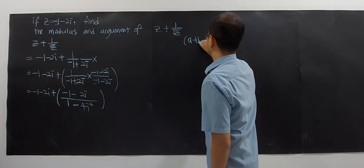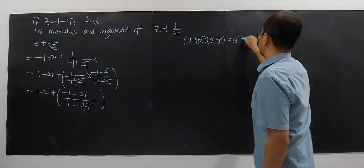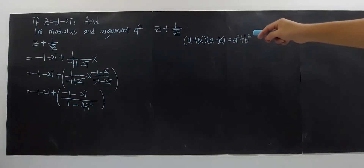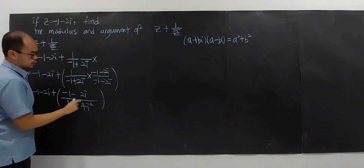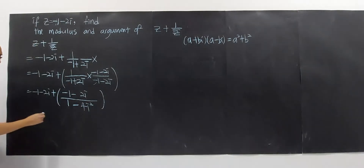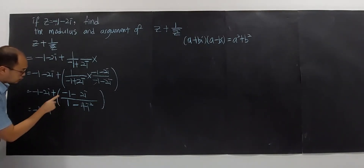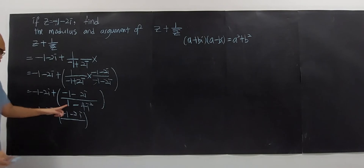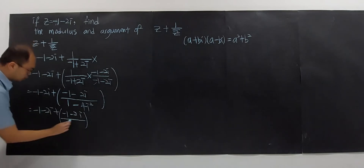In short, you know the formula: if you have a complex number multiplied by its conjugate, you get a squared plus b squared. You can prove this by expanding. So for this case: 1 squared plus 2 squared gives 1 plus 4, which is 5. Since i squared equals negative 1, the denominator becomes negative 4, then simplifying gives 5.